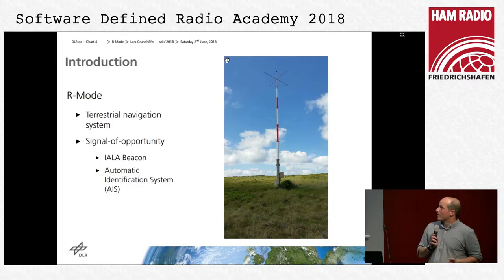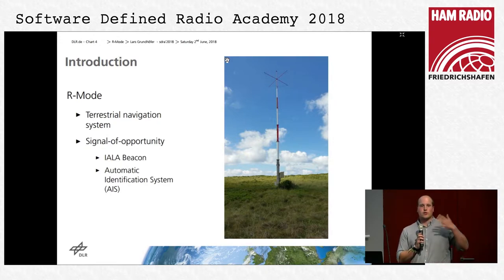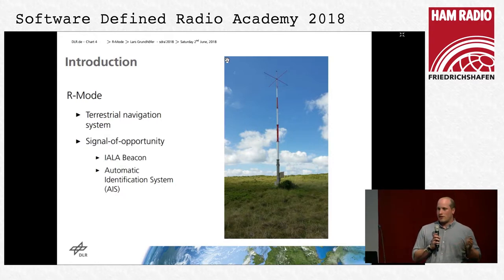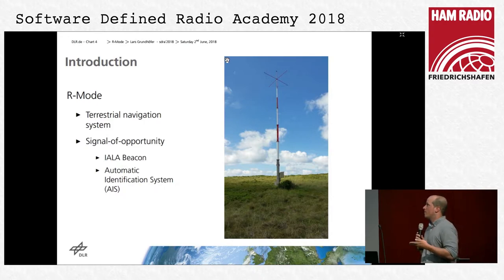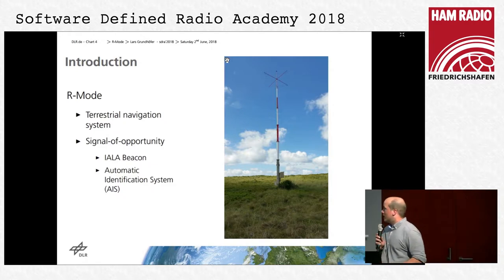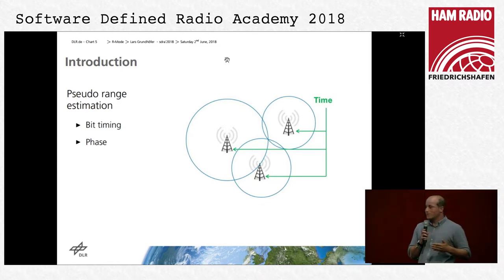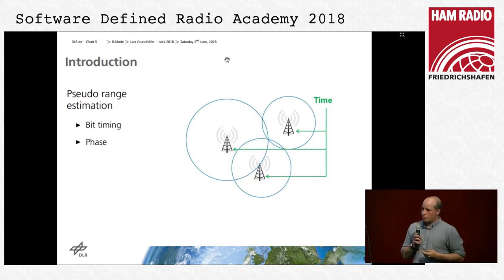The idea is called AIRO mode — a robust navigation system using existing signals, so-called signals of opportunity. For the maritime environment, this would be the YALA Beacon, a differential GPS service for ships in the 300 kilohertz range, very near to ham bands, and the non-directional beacon of airplanes. Another option is the Automatic Identification System (AIS), where ships communicate with each other. The basic problem is to get pseudo-range estimation from time-synchronized transmitters, which we can do by estimating the phase.